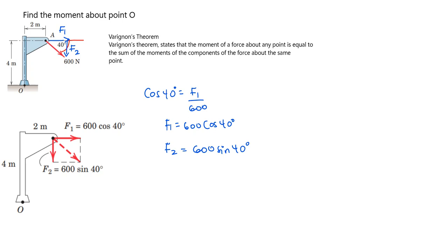The moment will be equal to the force times the perpendicular distance. For F1, we look at its line of action, and we consider the perpendicular distance from the line of action of F1 to the point of rotation. That perpendicular distance is four meters. So the moment of F1 equals 600 cosine of 40 degrees times four meters. This causes the moment to rotate clockwise.